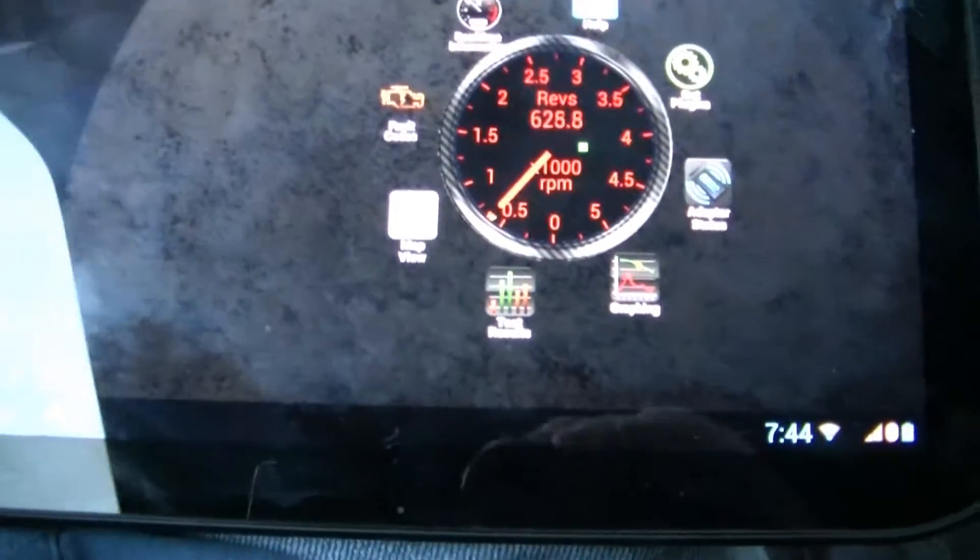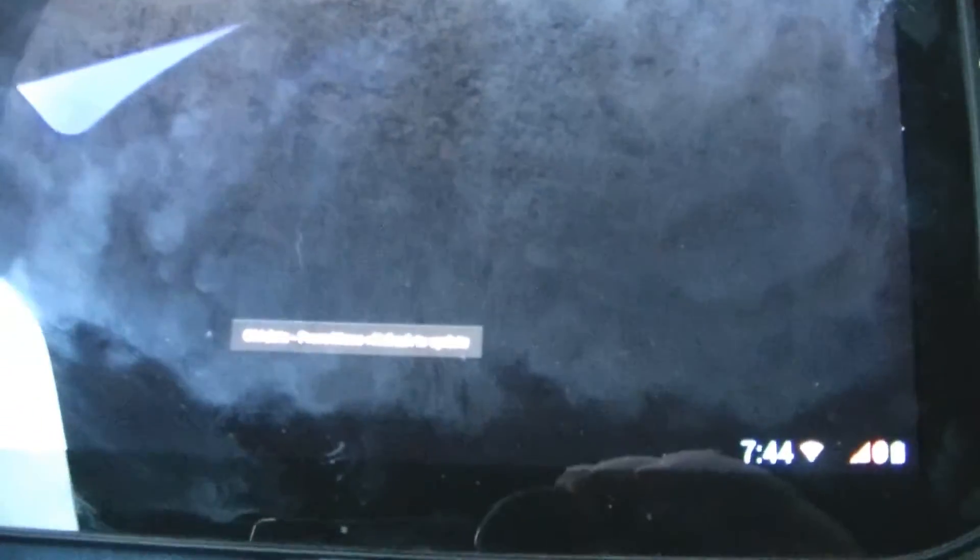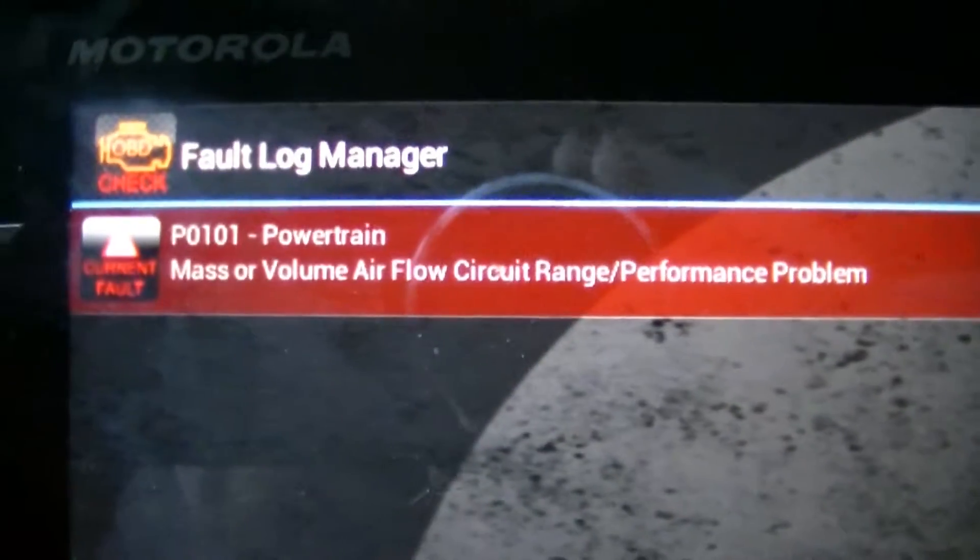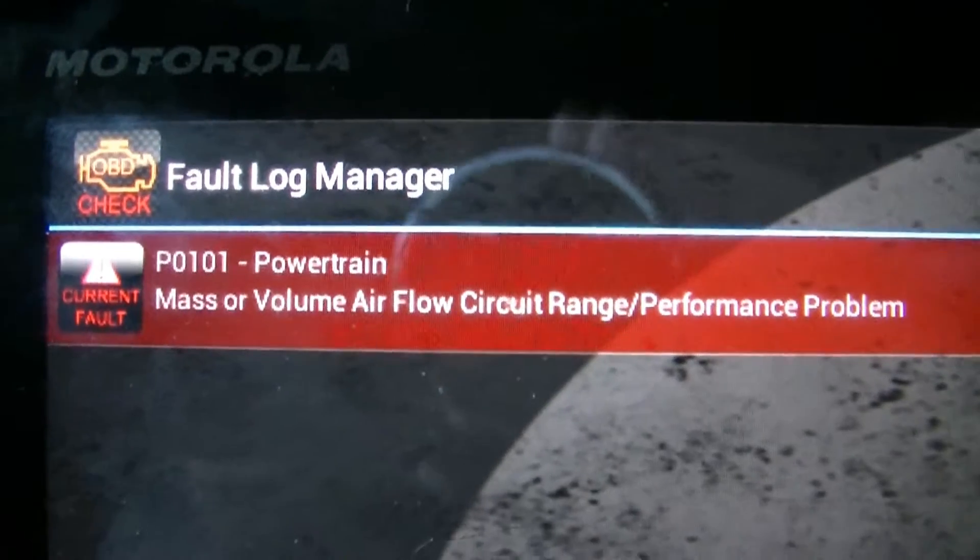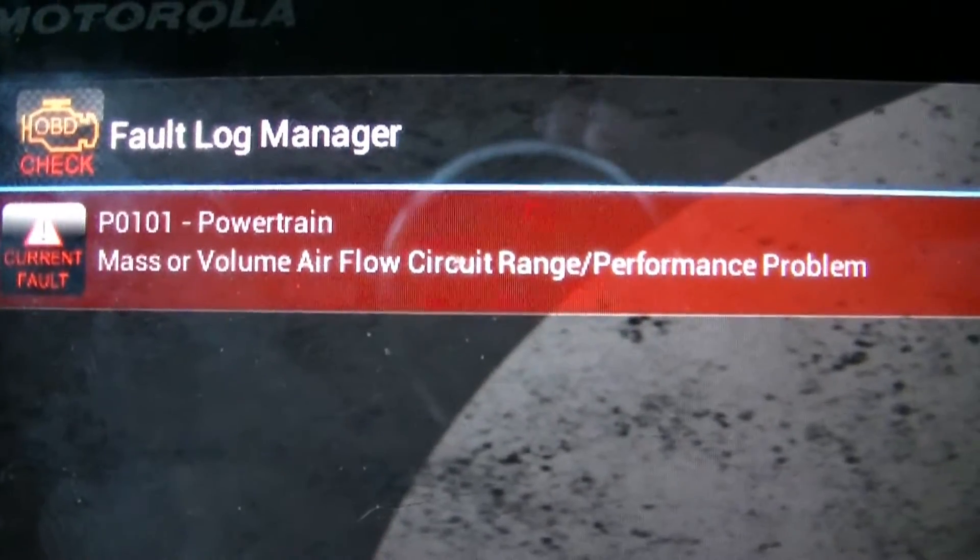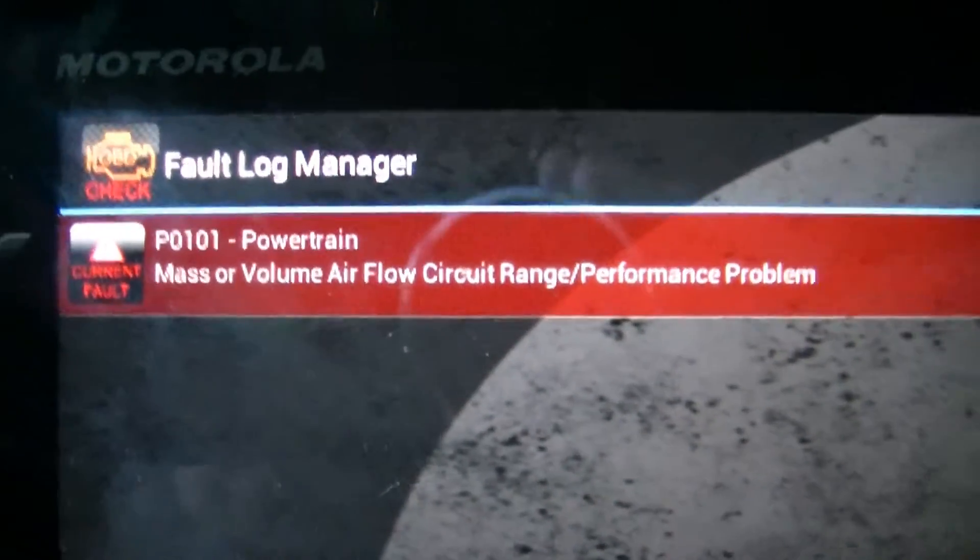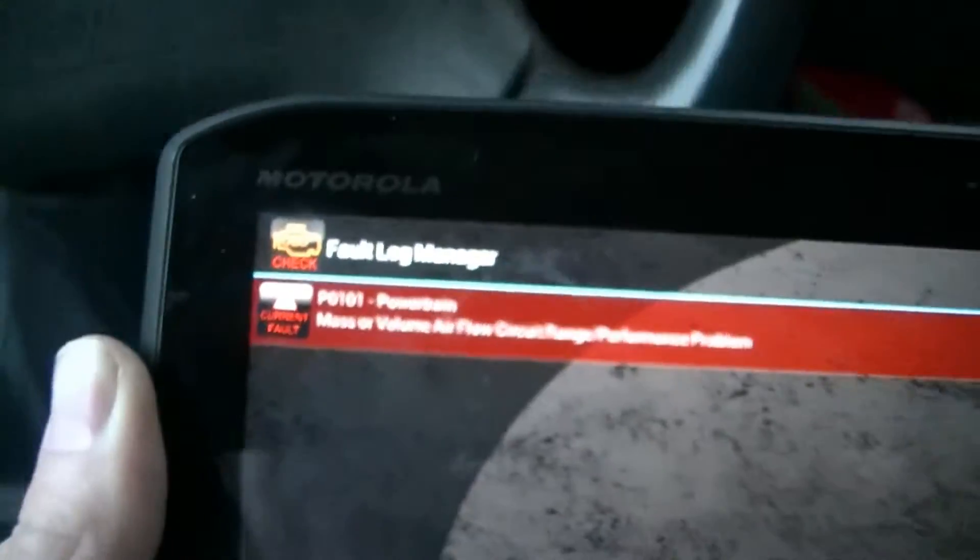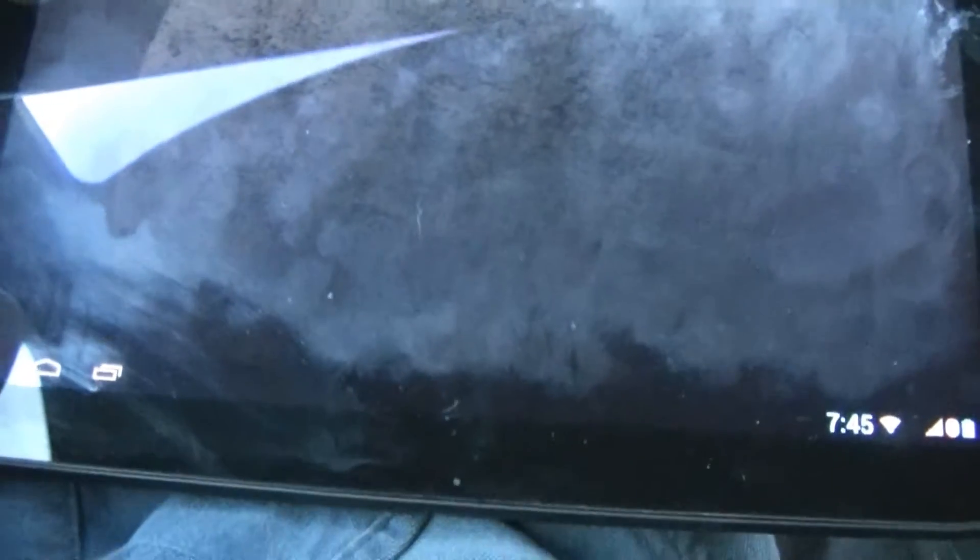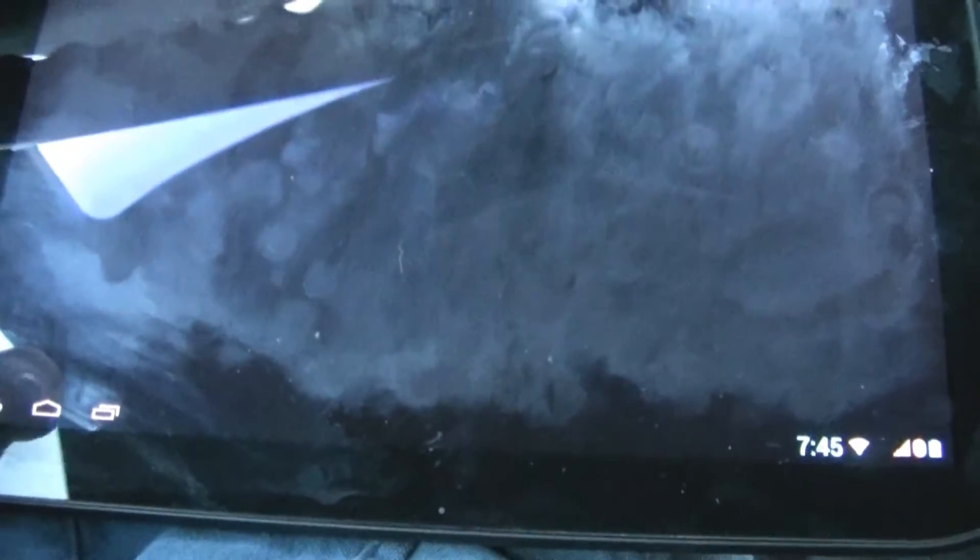So we're gonna take a look at my fault codes. And you can see I got a P0101 mass airflow circuit performance problem. So that's the code I'm getting, P0101. I looked that up online and that has to do with the MAF sensor.